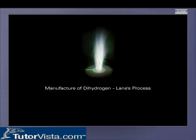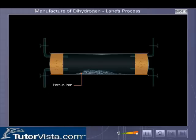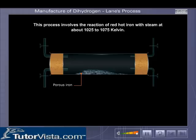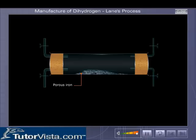On an industrial scale, dihydrogen is manufactured by Lane's process. This process involves the reaction of red-hot iron with steam at about 1025 to 2075 Kelvin. Lane's process consists of two stages: the oxidation stage and the reduction stage.